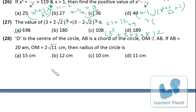A problem from geometry. O is the center of the circle. AB is a chord of the circle. OM is perpendicular to AB.